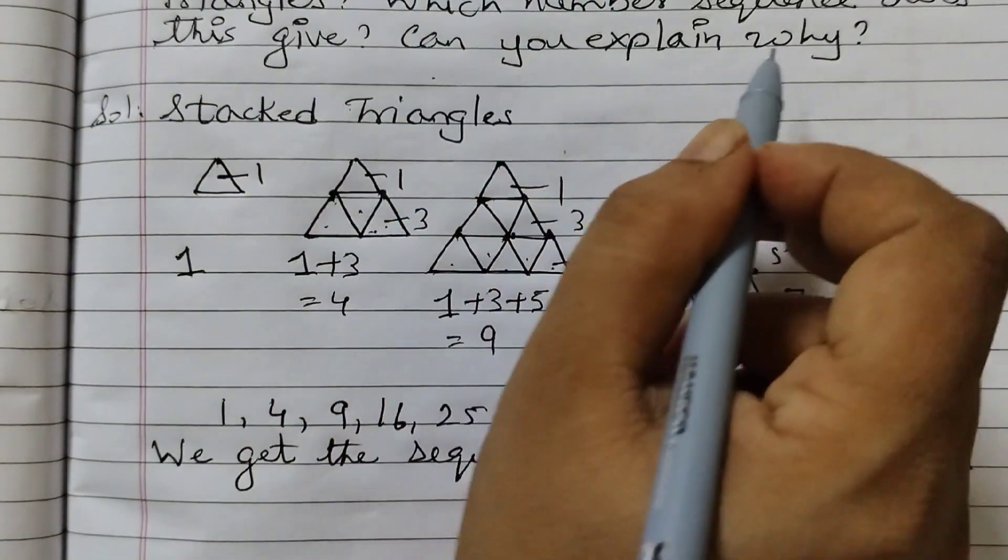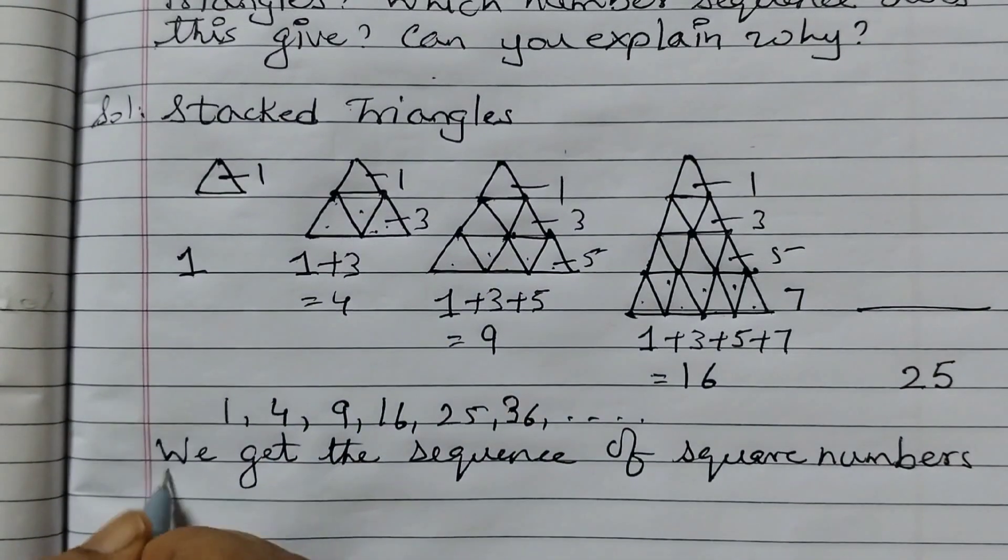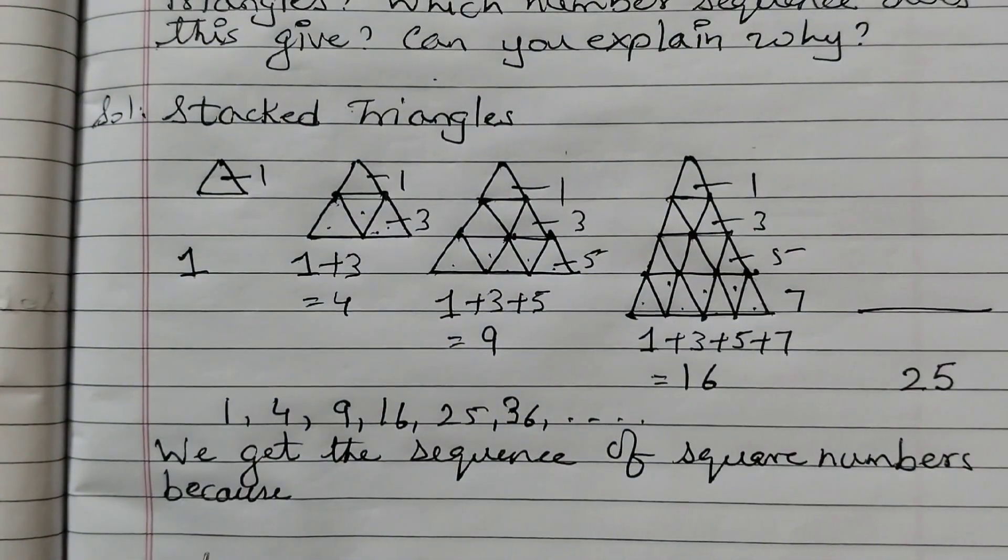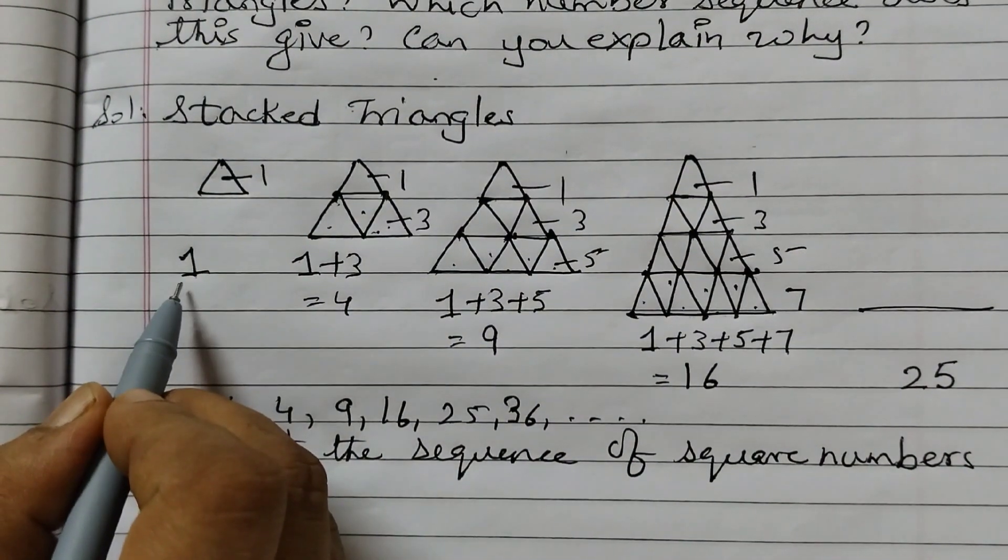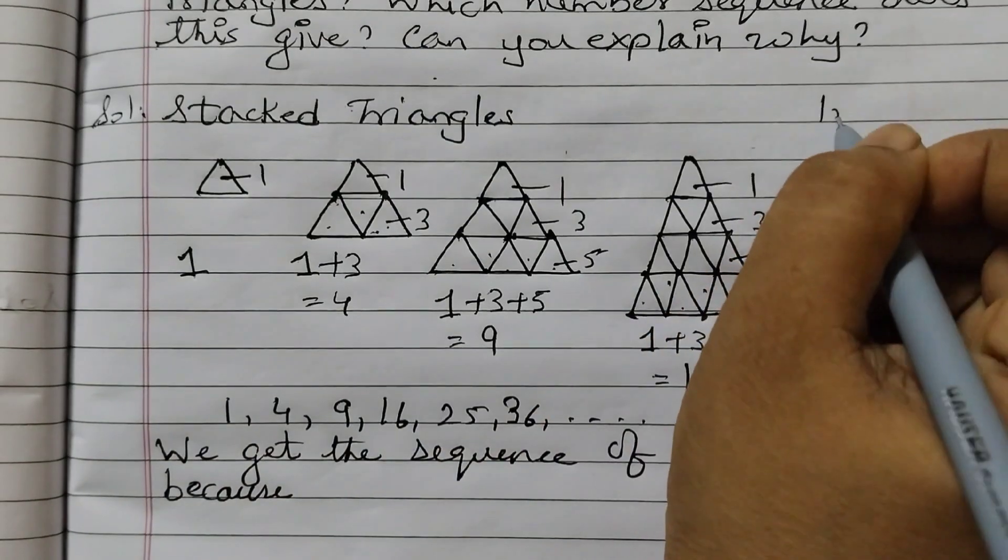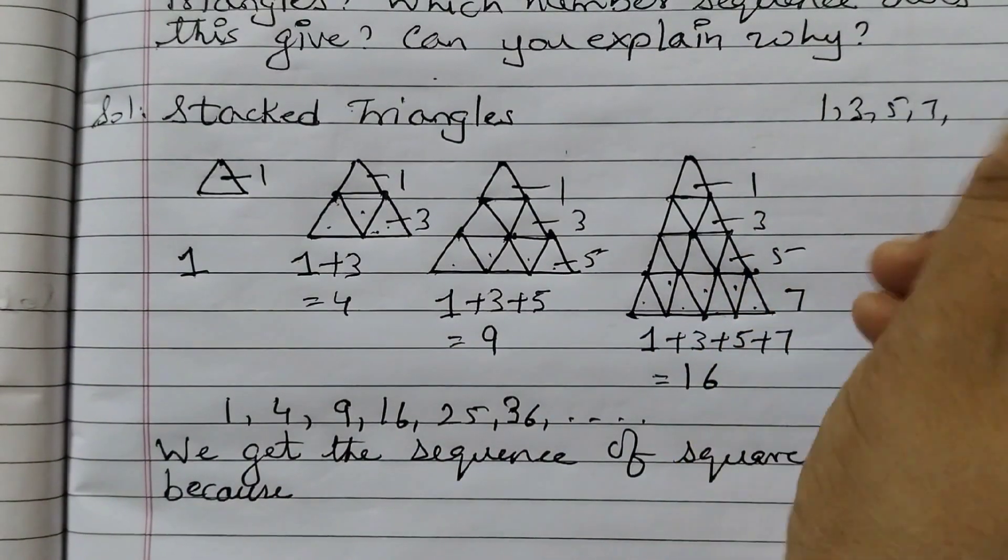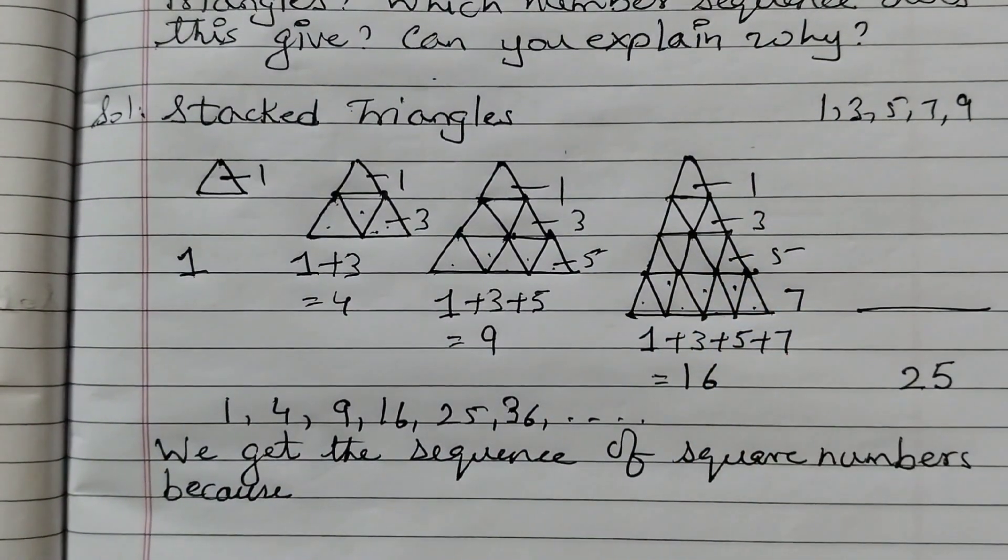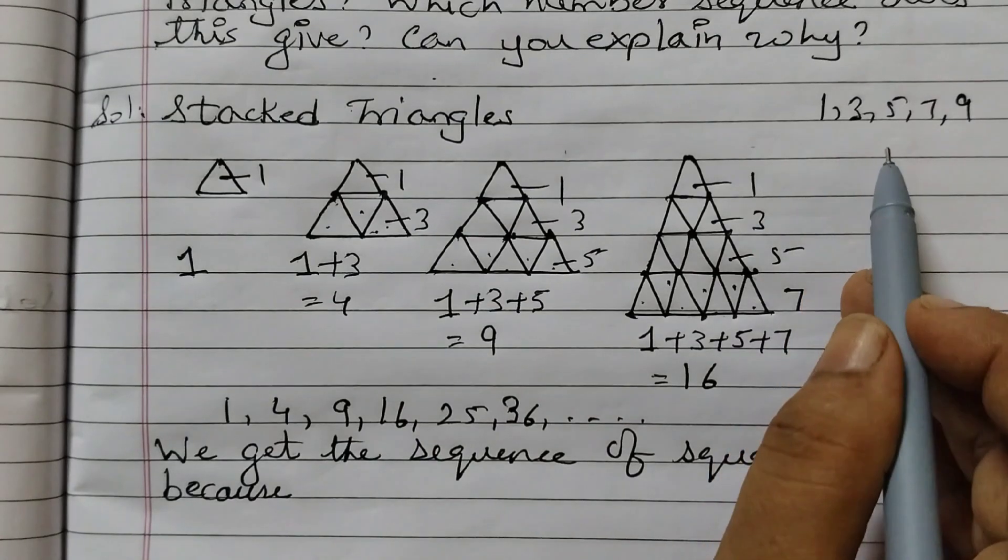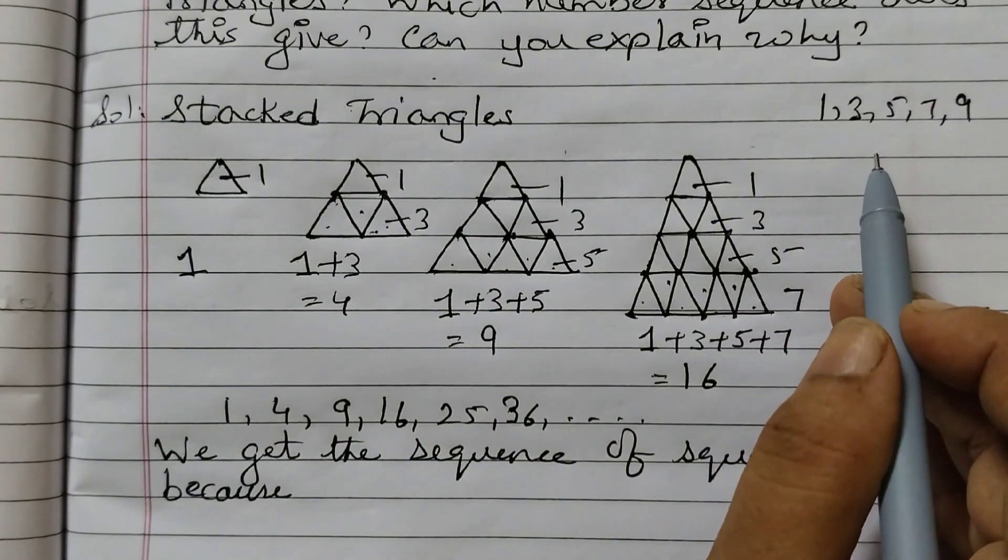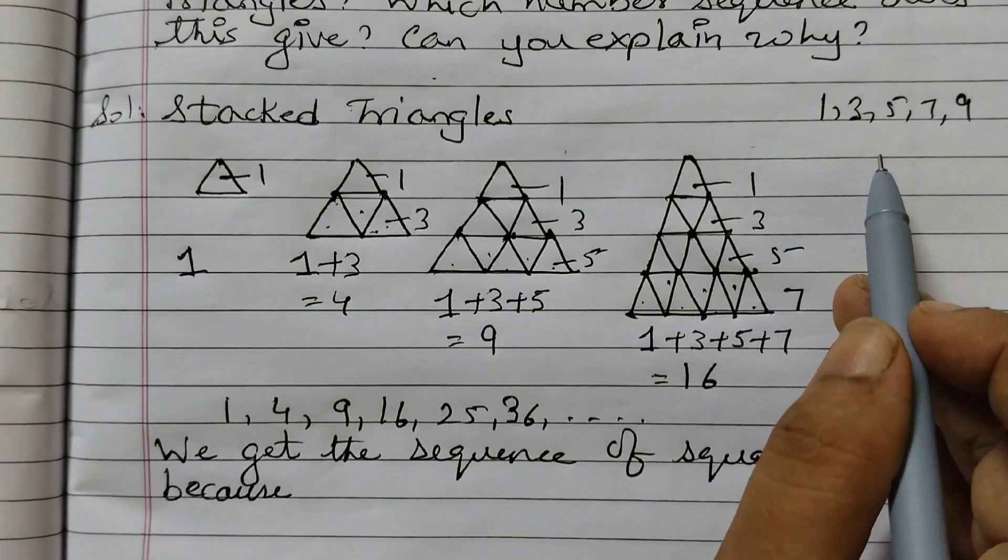Can you explain why? Because adding up odd numbers - these are all odd numbers: 1, 3, 5, 7, 9. These are all odd numbers. So when we are adding these odd numbers starting from 1, it gives square numbers.